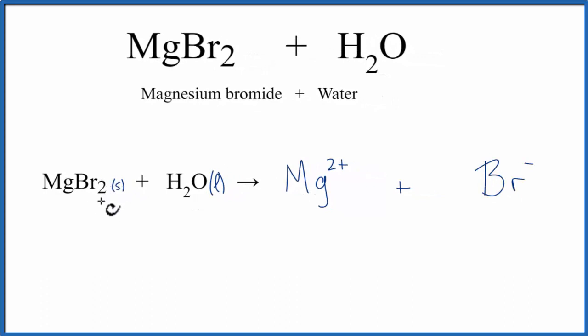But this 2, this subscriptive 2, tells us that there's two bromine atoms here. So we need to put a 2 in front of our bromide to make sure the numbers agree on each side of the equation.